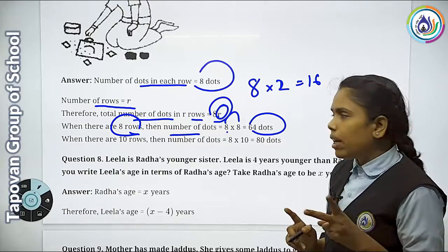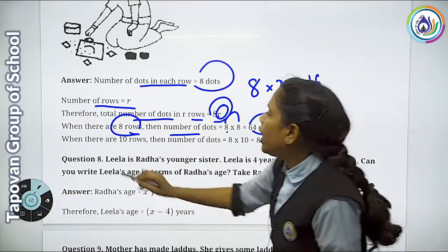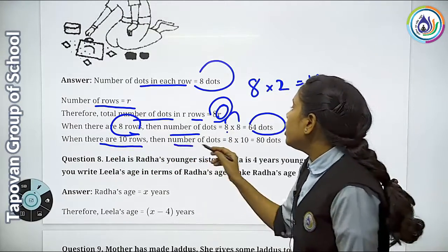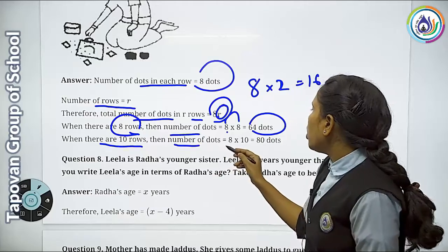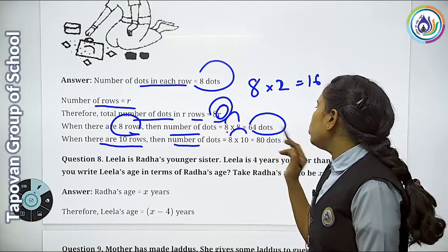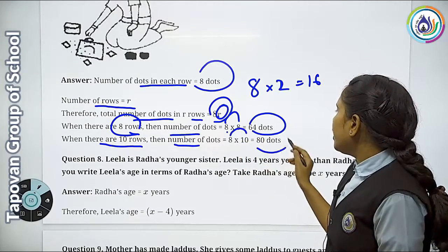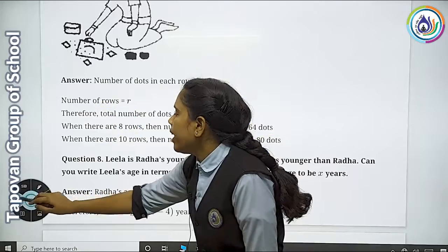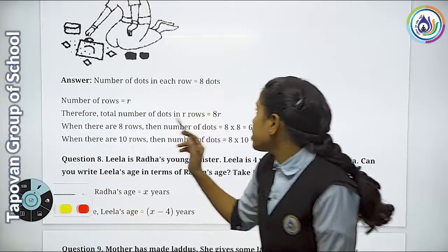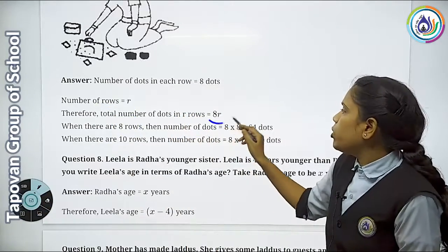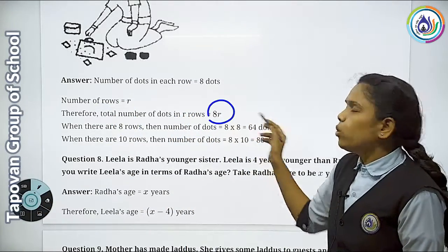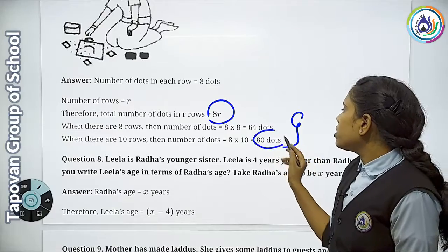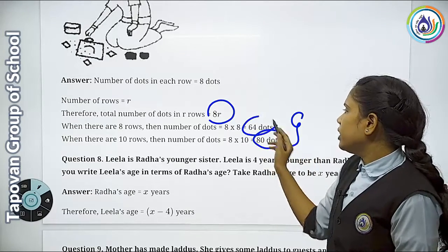For 10 rows, then the number of dots = 8 × 10 = 80 dots. This is algebra — you express it this way. So whatever the number of rows changes to, through different rows you will get different dot counts. Right.